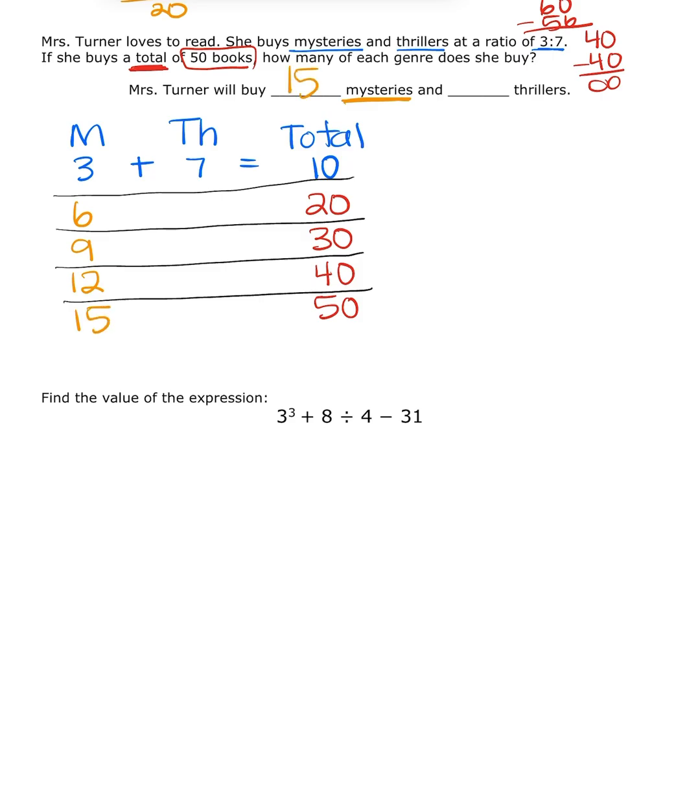And then, we go over to thrillers. Thrillers was this middle section here. So, I started at a ratio of 7. And I need to skip count all the way down until we get to our 50 level for our total. So, 7, 14, 21, 28, and 35. So, there were 35 thrillers. And again, together, my two numbers should equal my total of 50. 15 plus 35 does equal 50. I checked myself. So, pause your video and go answer number 3.